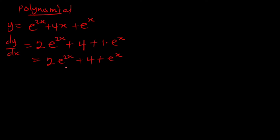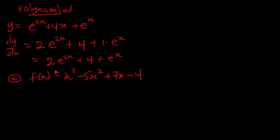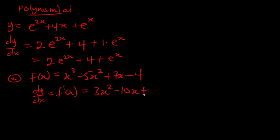Example two: differentiate f(x) equal to x cubed minus 5x squared plus 7x minus 4. Using the power rule for each term, our f'(x) is going to be: the power rule for x cubed gives 3x squared, for 5x squared gives 10x, for 7x gives 7, and the derivative of a constant is 0. So f'(x) equals 3x squared minus 10x plus 7.